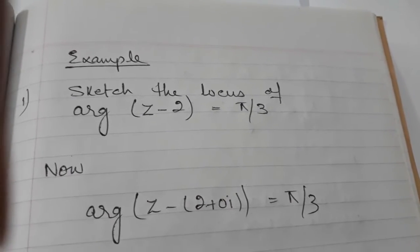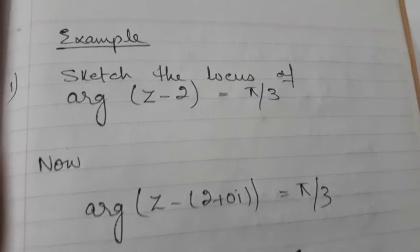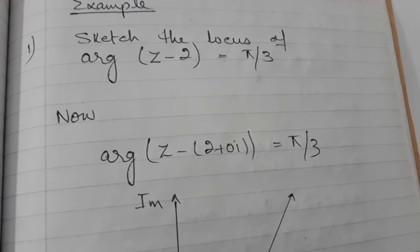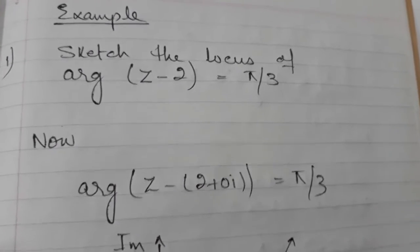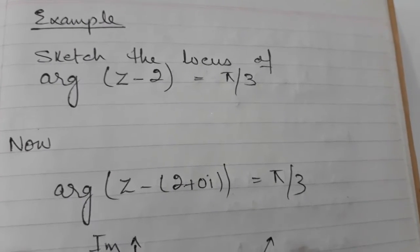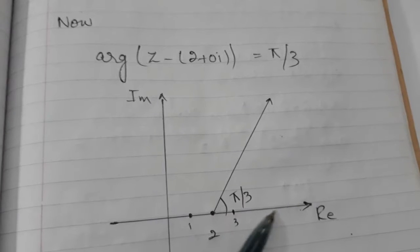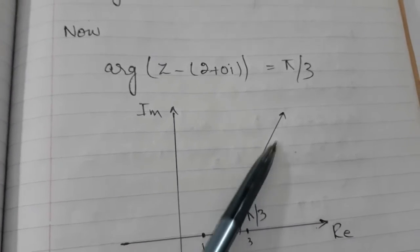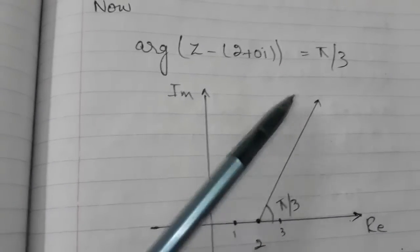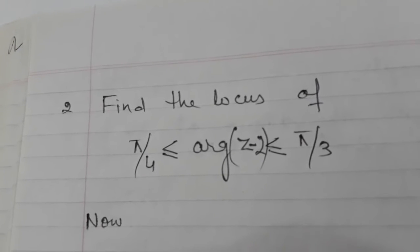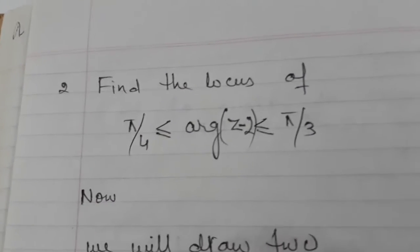Now let's see this example: sketch the locus of arg(Z minus 2) = π/3. Bringing it into the form Z minus Z1, my point becomes (2, 0) and the angle is π/3. In the Argand diagram I mark point (2, 0), draw a horizontal line (which is already my real axis), and then draw the half-line at π/3, which is equal to 60 degrees. So this is my locus Z, a line at 60 degrees from that axis.